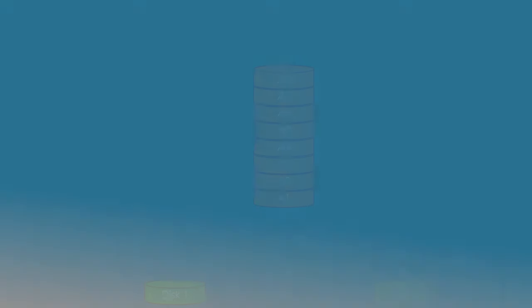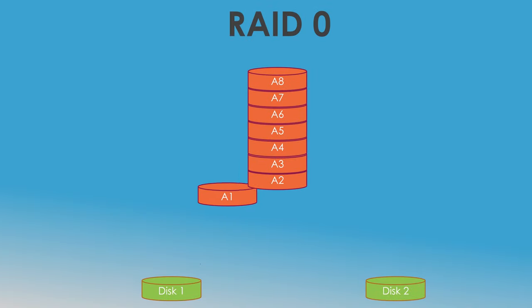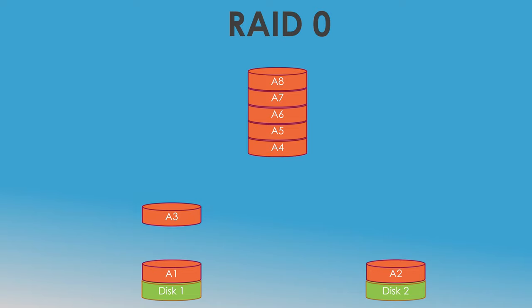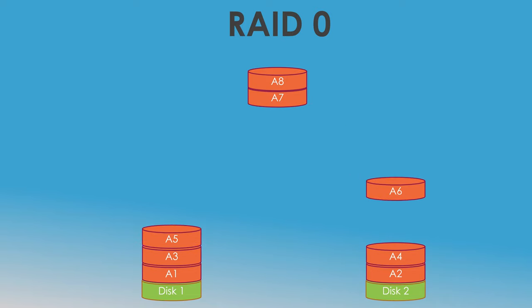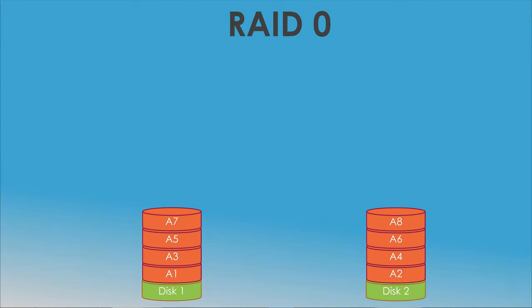The first type is RAID 0. It is based on the principle of data striping. Data is split into blocks of similar lengths that get written across all the drives in the array. The main purpose of such a system is to achieve actual disk performance two-fold or even more, while full disk capacity of all disks within the system is available. In simpler terms, it's like combining two or more disks into one big drive.